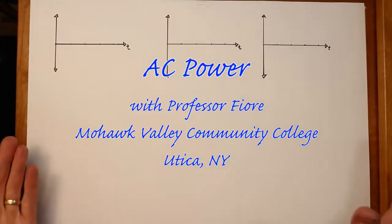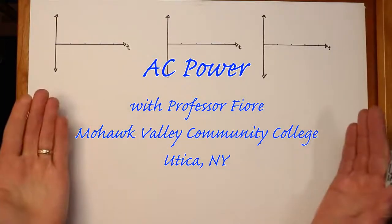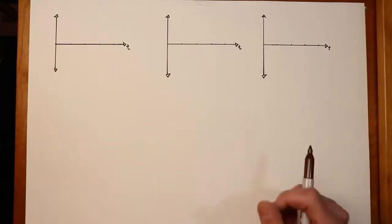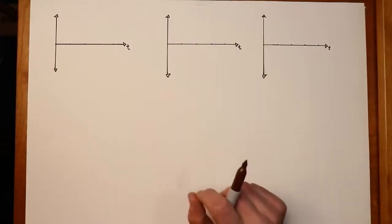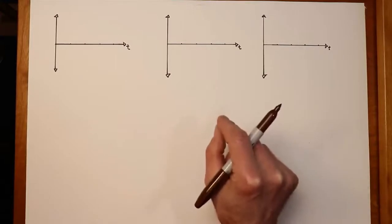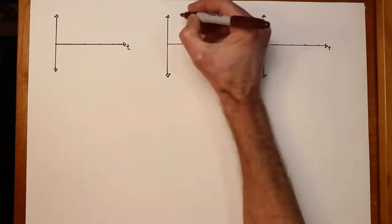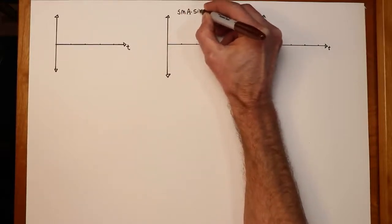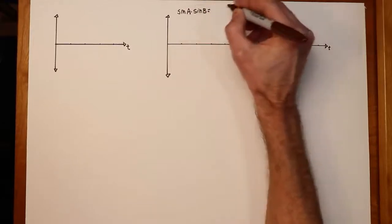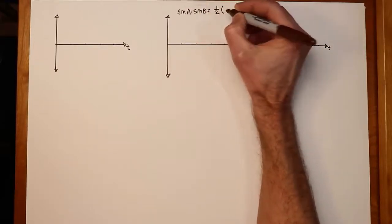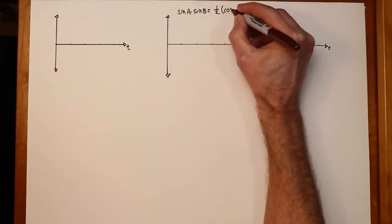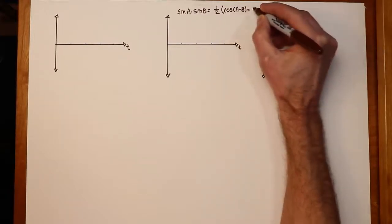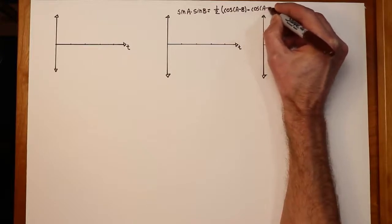Today we're going to look at power calculations — what happens with inductors, capacitors, and resistors when it comes to power. The first thing to note is a very useful trig identity: sine A times sine B is equal to one-half times the quantity cosine of (A minus B) minus cosine of (A plus B).